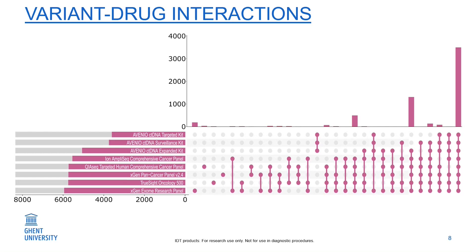Another thing you can see on this figure is that around 30 percent of the variant-drug interactions in our meta-knowledge base are not covered by any of these panels. Half of these uncovered variant-drug interactions are because the variants are single nucleotide variants not present in these panels. With whole genome sequencing we would easily find these single nucleotide variants, but we can also add the positions of these single nucleotide variants to specific panels to target these variant-drug interactions.